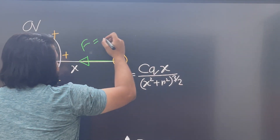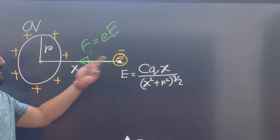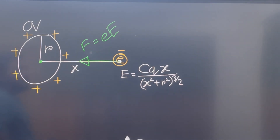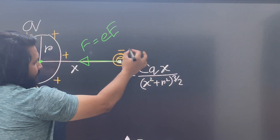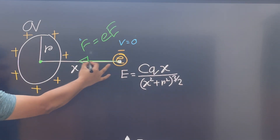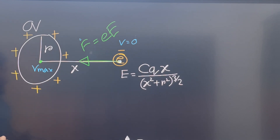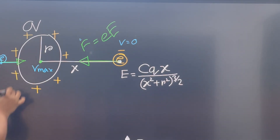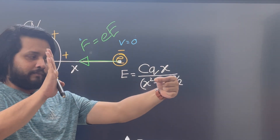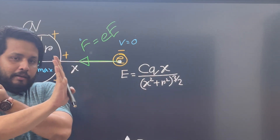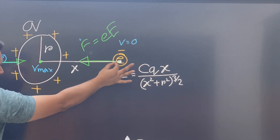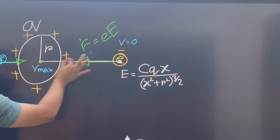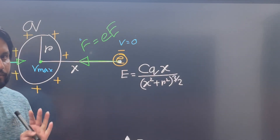Now, what is the force? When an electron is placed on the axis, it experiences a force directed toward the center. As we move the electron along the axis and release it, it will oscillate. This is a simple harmonic motion — the electron undergoes simple harmonic motion.